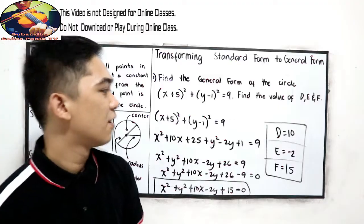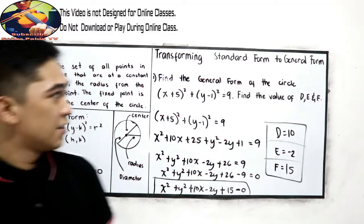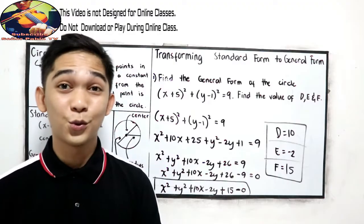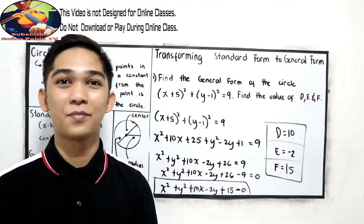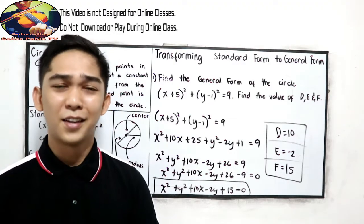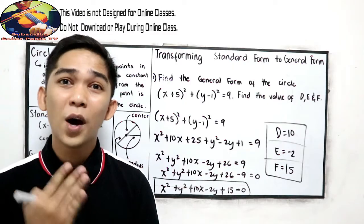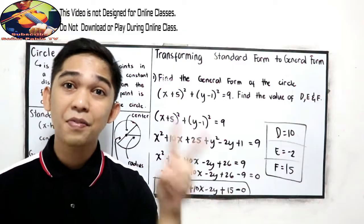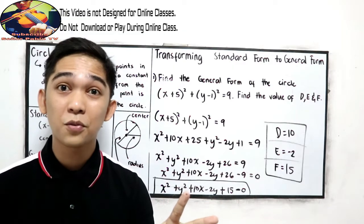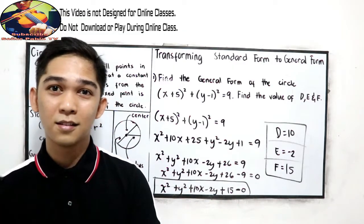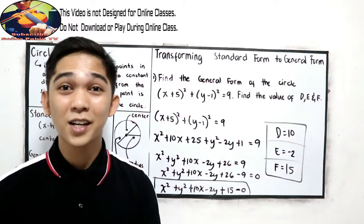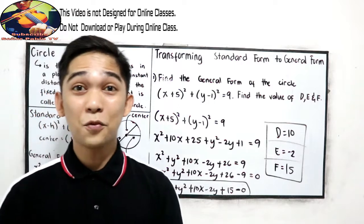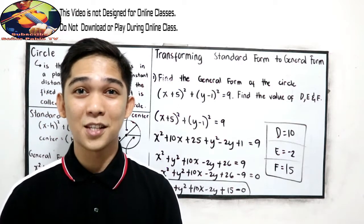That is transforming standard form to general form. In our next video, what if the given is the center and the radius? We're going to find the general form or the standard form. Stay tuned for our next video. Thank you for watching Senior Pablo TV.